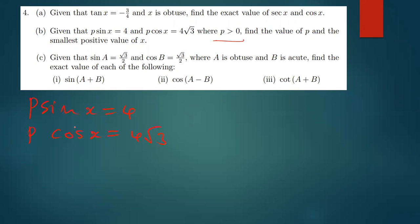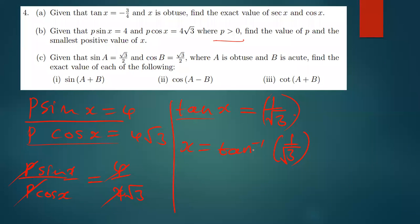To solve this, divide the first equation by the second: P sin x over P cos x equals 4 over 4 root 3. The P's cancel, and sin x over cos x equals tan x. The right side simplifies to 1 over root 3. So we find the inverse tan of 1 over root 3.